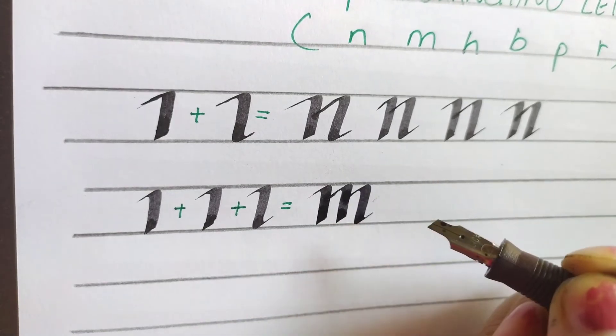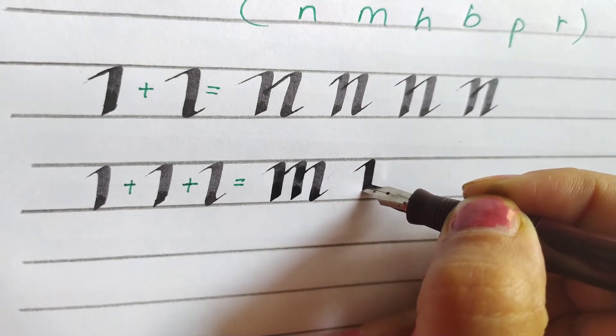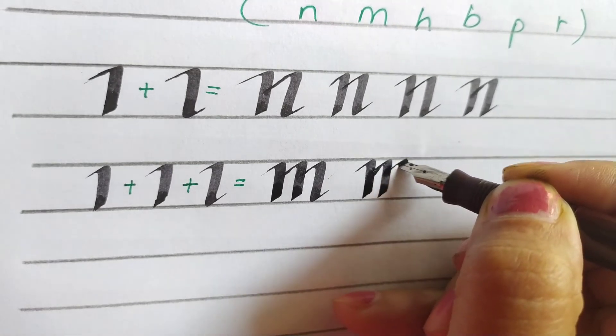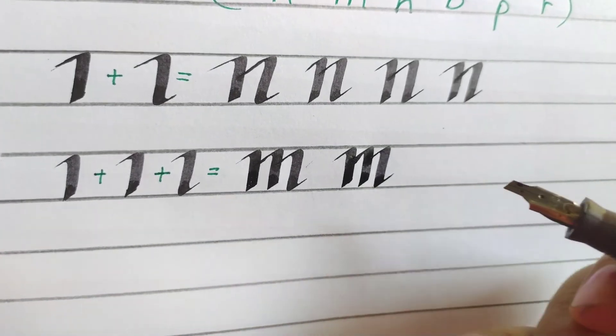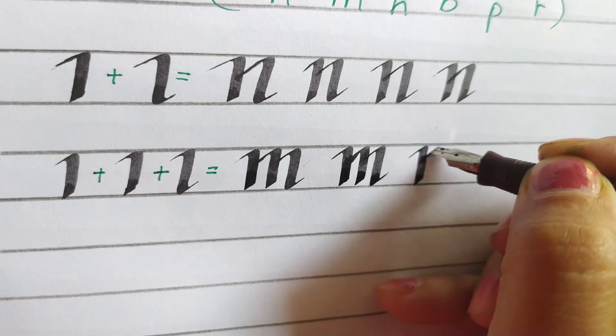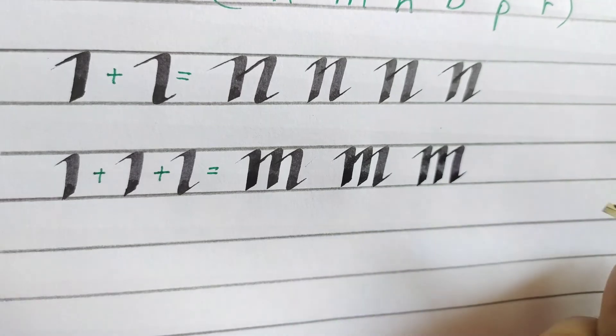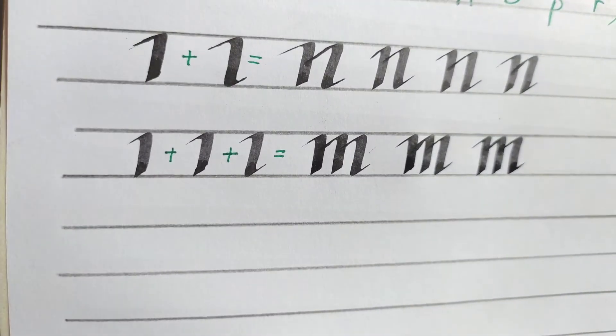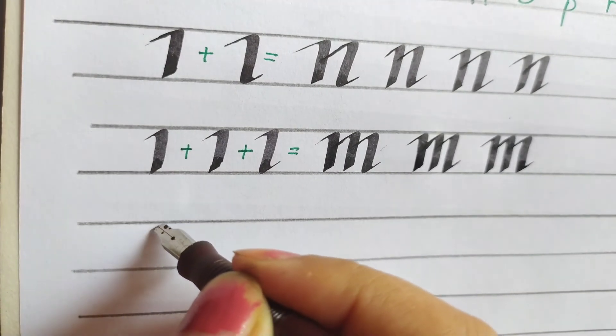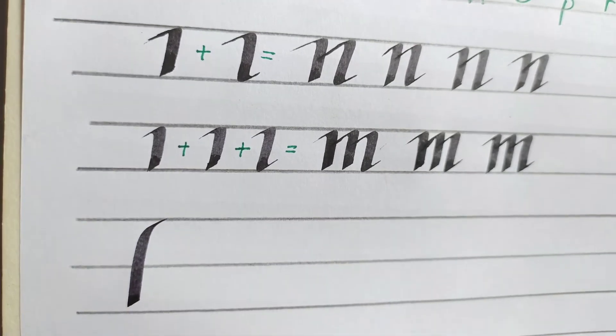This is alphabet M. Do as much practice as you can to get the clear strokes. Now we will write alphabet H. To write alphabet H initially we will make a standing stroke like this.